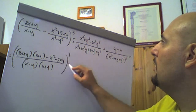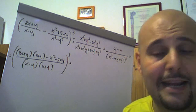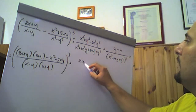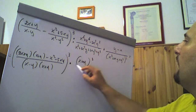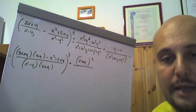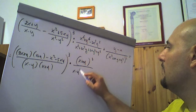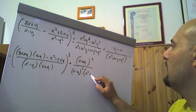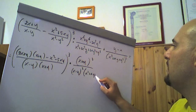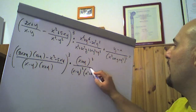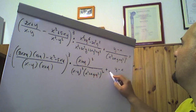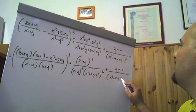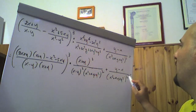Chiusa la tonda al cubo, per... scrivo per e ribalto numeratore. E tra l'altro questo lo scrivo come (x più y) al cubo fratto quello che abbiamo visto: non è altro che (x meno y) al quadrato per (x quadro più xy più y quadro) al quadrato, più (y meno x) fratto nuovamente (x quadro più xy più y quadro) elevato al quadrato, uguale.